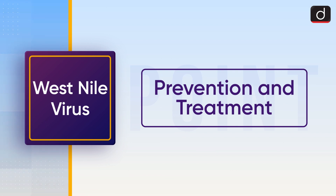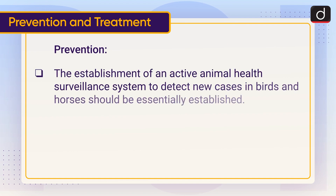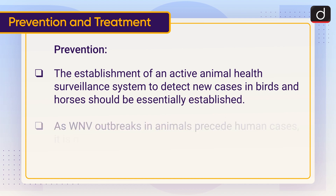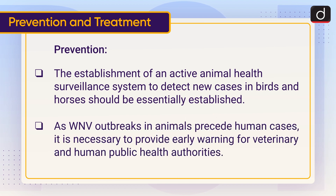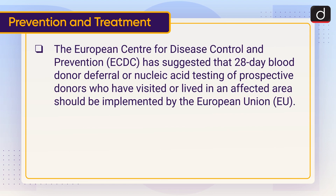Now let's discuss prevention and treatment. The establishment of an active animal health surveillance system to detect new cases in birds and horses should be essentially established, as WNV outbreaks in animals precede human cases. It is necessary to provide early warning for veterinary and human public health authorities. The European Centre for Disease Control and Prevention has suggested that a 28-day blood donor deferral or nucleic acid testing of prospective donors who have visited or lived in an affected area should be implemented.